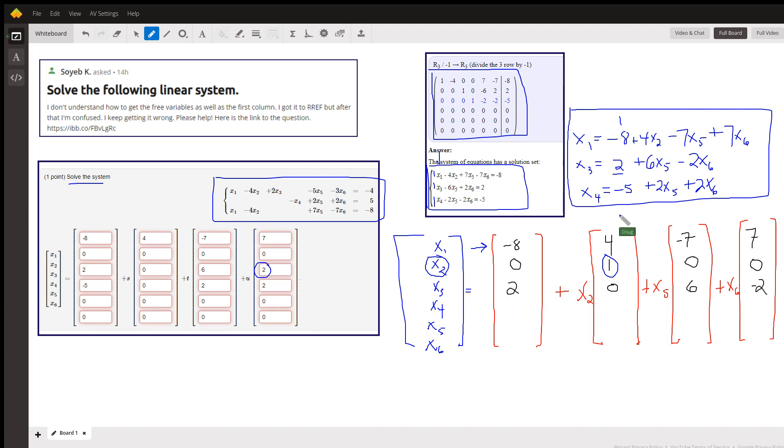So for x sub 4, we've got a negative 5. We've got nothing for x sub 2, so another zero there. We have 2 times x sub 5, 2 times x sub 6.